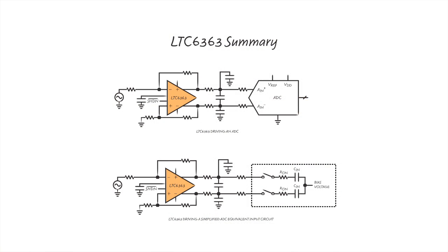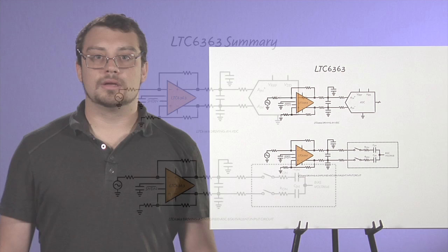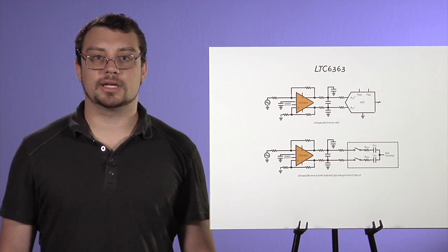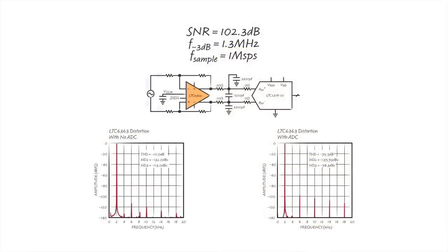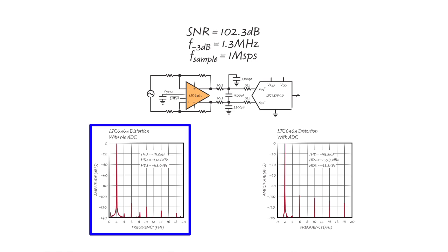Theoretically, the filter bandwidth could be decreased to whatever SNR we wanted. Severely reducing the filter, however, can seriously affect system distortion. When the ADC input connects to the sample capacitors, there's a brief glitch when charge sharing occurs among the driver's output capacitance, filter capacitance, and the ADC capacitance. If this charge doesn't completely settle out, then distortion will take a significant penalty. The distortion of the LTC 6363 when driving only a 1.3 MHz filter with a 2 kHz signal is minus 111 dB.